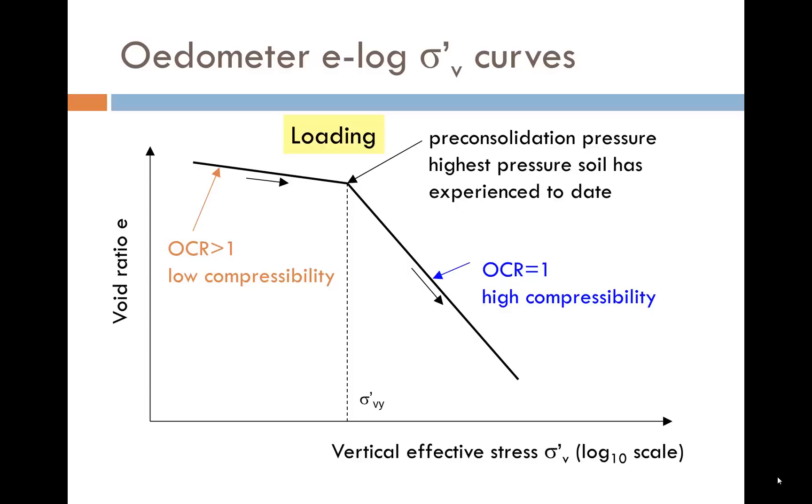The loading starts off on the left. At this stage, the soil is over-consolidated, OCR greater than 1. Note that the response is stiff. In other words, there is little change in void ratio for an increase in vertical effective stress. Once the pre-consolidation pressure is exceeded, the response is much softer. This is the normal consolidation line where OCR equals 1. The void ratio now reduces much more for an increase in vertical effective stress.